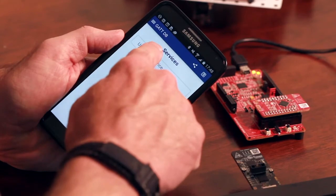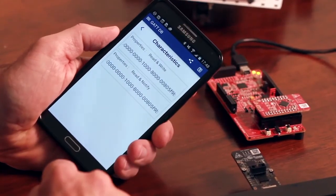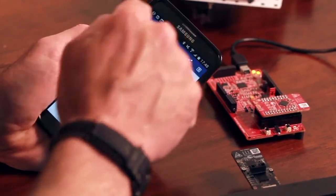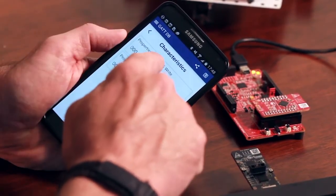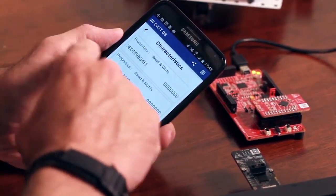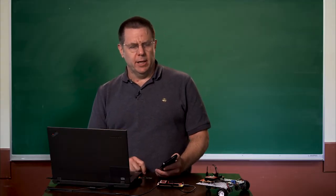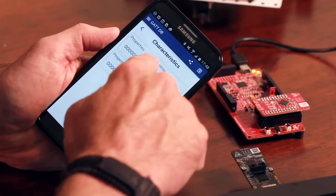I see unknown service. I click on unknown service and I see there's two characteristics. One of them ends in F1. The other one ends in F2. You'll recall that the first one, the one ending in F1, is the red LED. So let's see here.